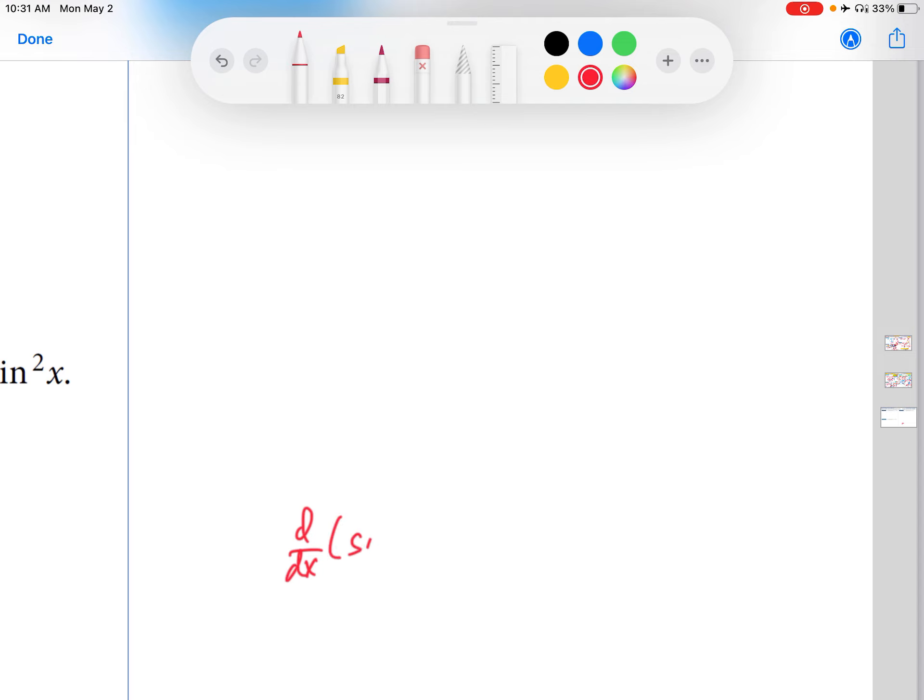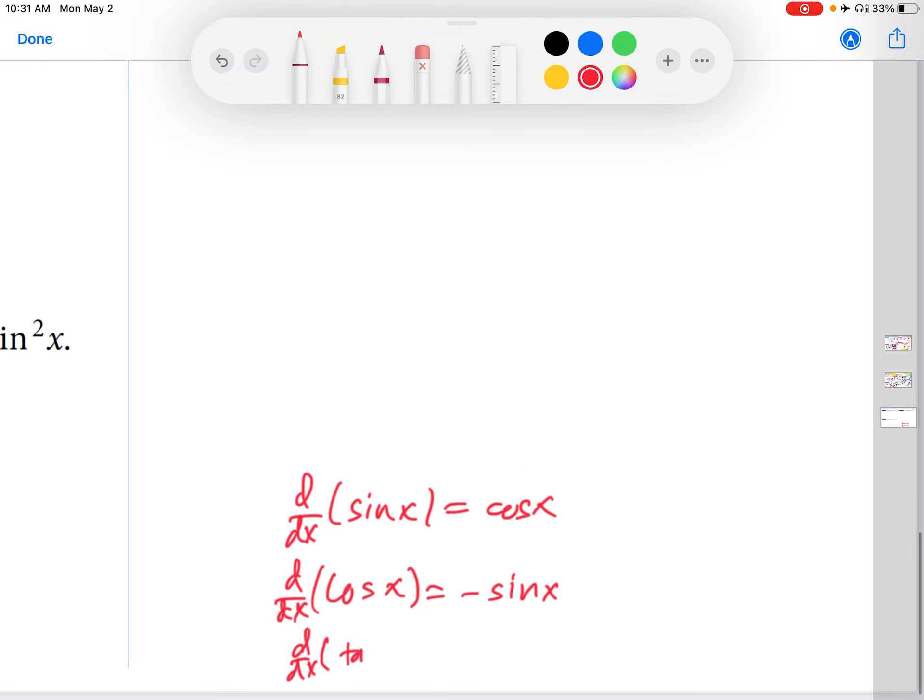So the derivative of sine x is cosine x. The derivative of cosine x is minus sine x. And then the derivative of tangent x, in case we need that, is secant squared x.